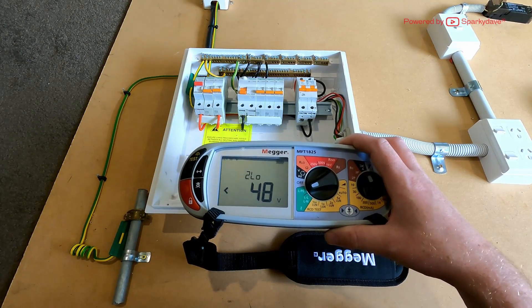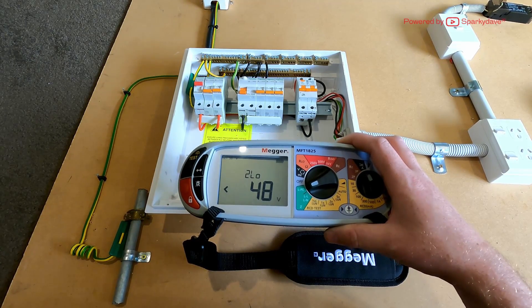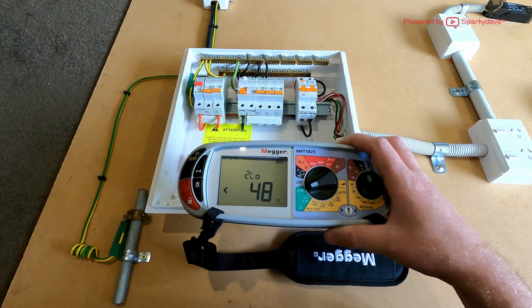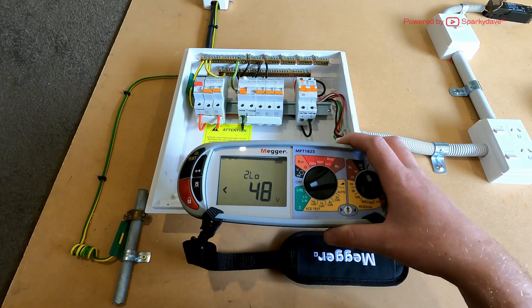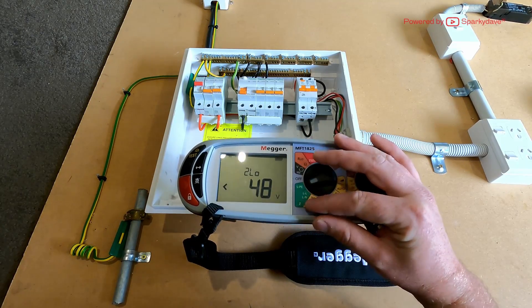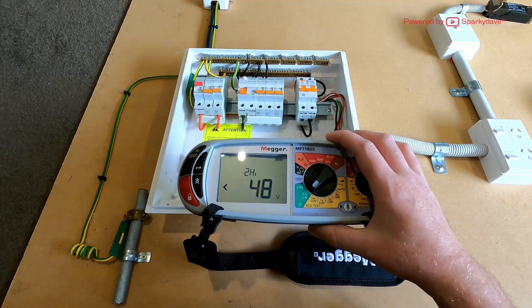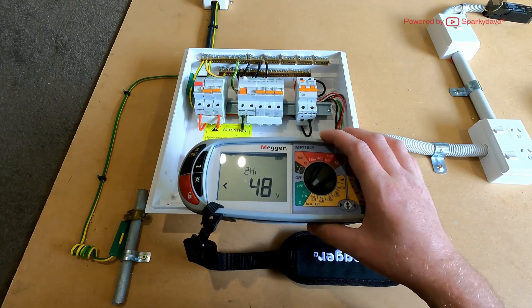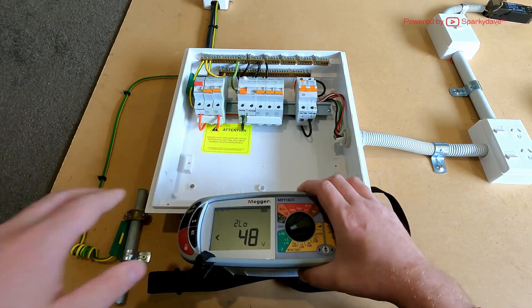The next one is your two low, and you shouldn't really be using this test. What it's designed for is if you've only got phase earth available and you need to do a low current test somewhere. On here, flick it to line neutral. The only test available is your two lead high current test.